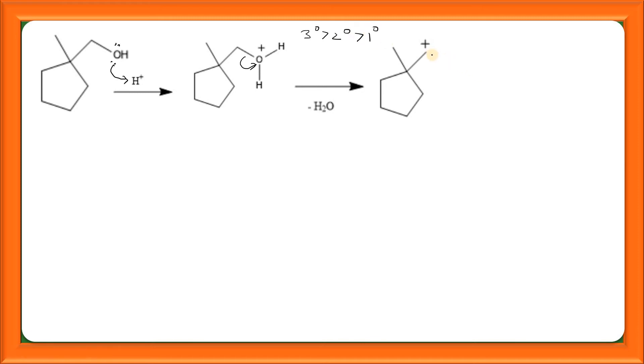It is a primary carbocation. In order to attain more stability, this will undergo rearrangement to give the more stable carbocation. This bond will shift on this carbon and this carbon will be having positive charge. We get this carbocation, it is a tertiary carbocation which is said to be more stable.